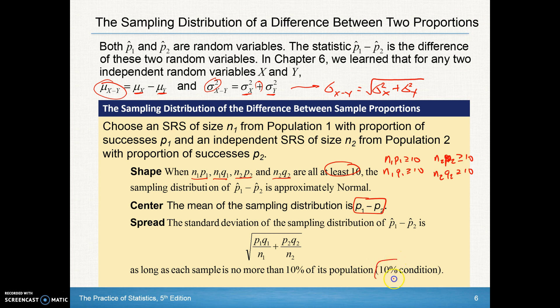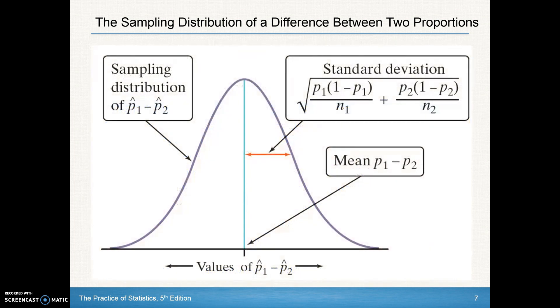We'd have to make sure we satisfy that 10% condition: 10 times our first sample is less than or equal to our population, and 10 times N-sub-2 is less than or equal to our population. So there's our sampling distribution of the difference, the mean difference, and we use Q1 and Q2 here.